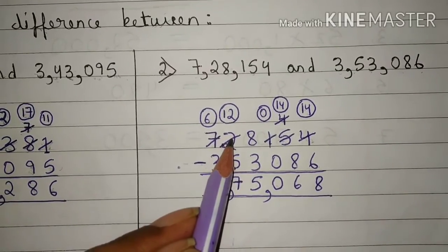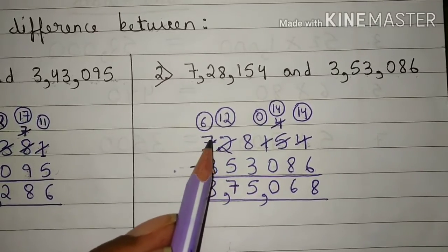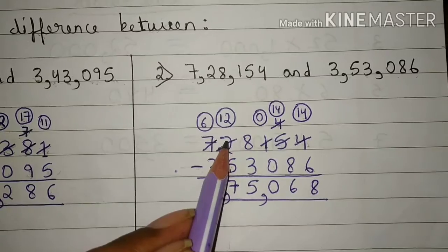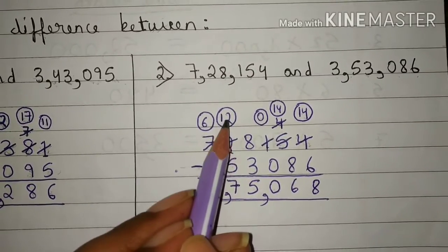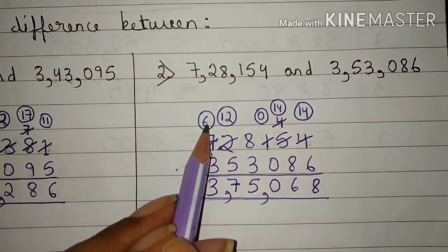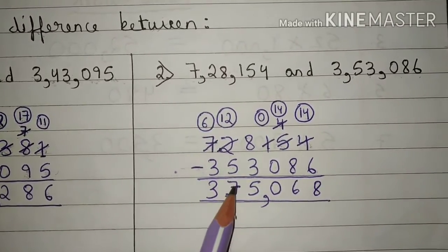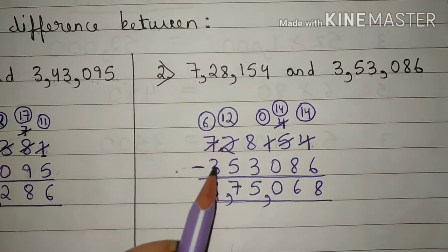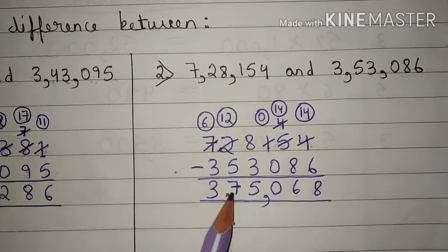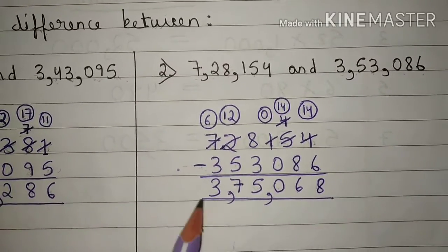Two is smaller than five, so we will borrow one number from seven to two. Now two will become twelve and seven will become six. Twelve minus five is seven. Six minus three is three. The answer is 3,75,068.